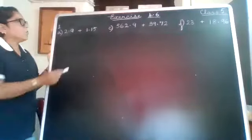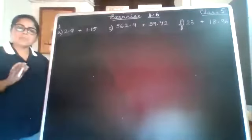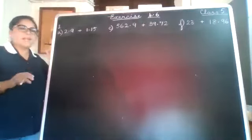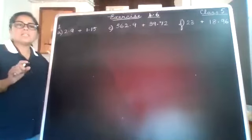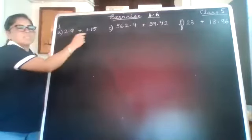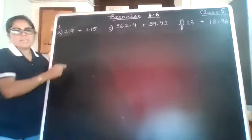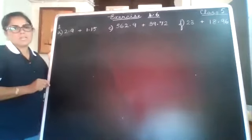So today we are going to learn how to add decimal numbers. Now adding decimal numbers is very similar to adding whole numbers. The only thing you have to keep in mind is that when you write these numbers one below the other, the decimal point needs to be one below the other.